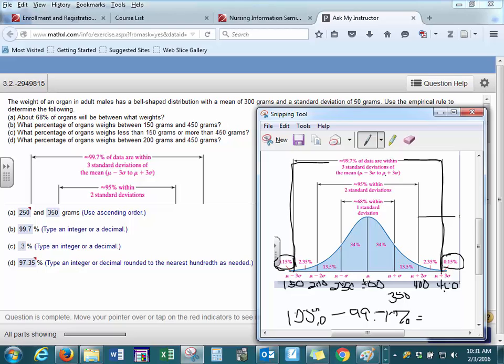...it gives us the values that lie above three standard deviations from the mean. And part D: what percent of organs weigh between 200 and 450 grams? So let's erase our previous information.